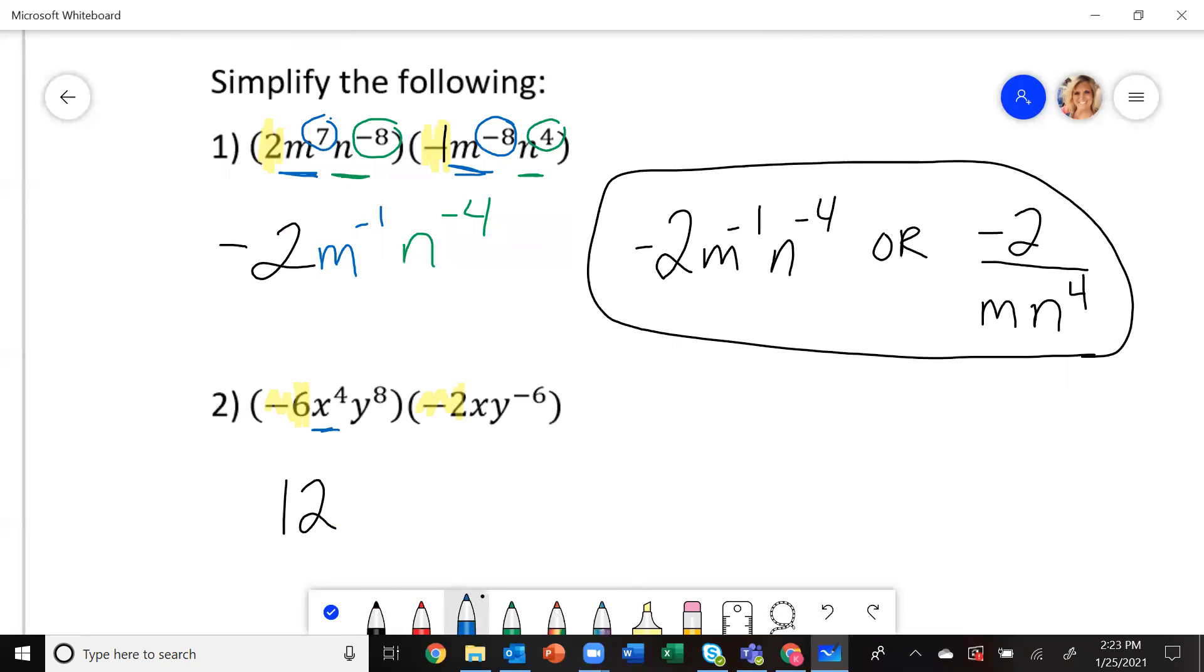Then my x's. Add the exponents. That's a four. And if there's not a number there, that's a one. So this is x to the fourth.